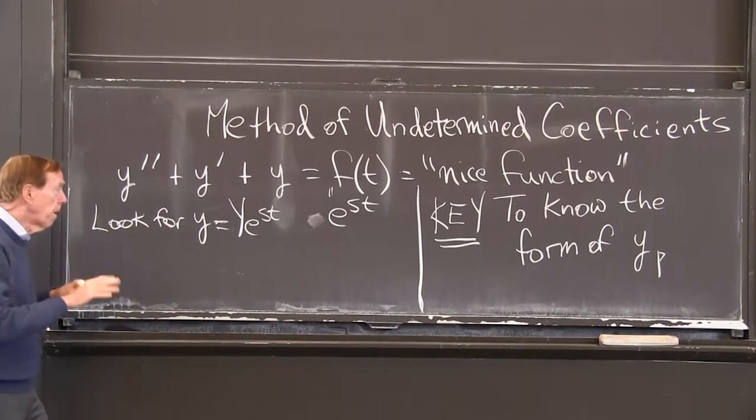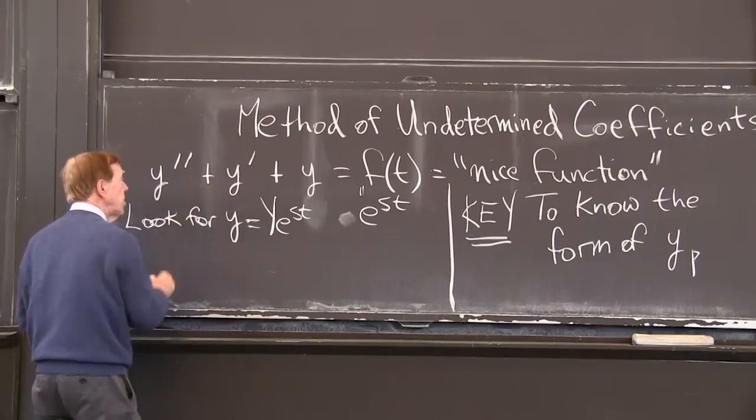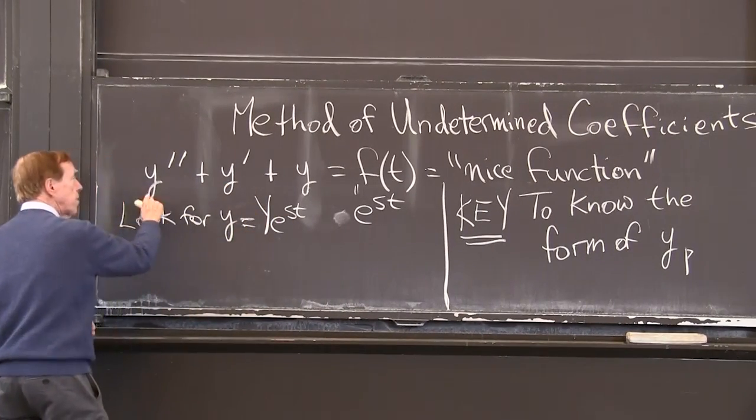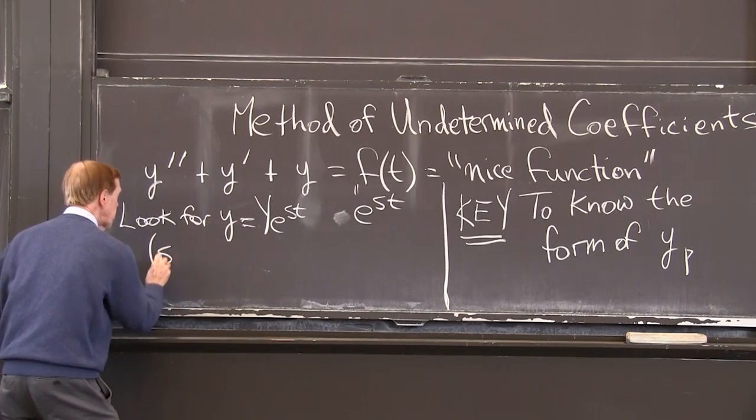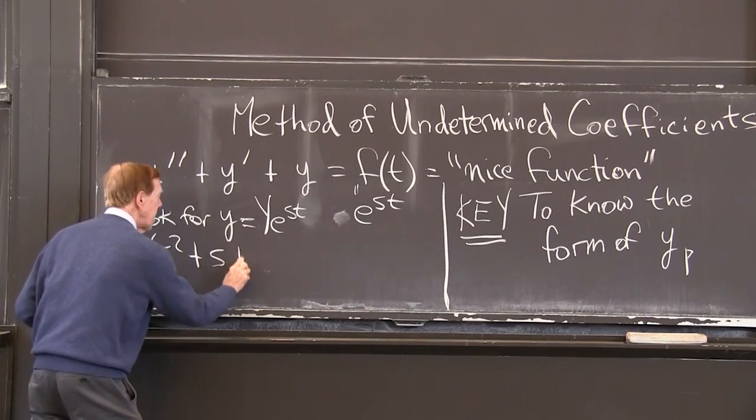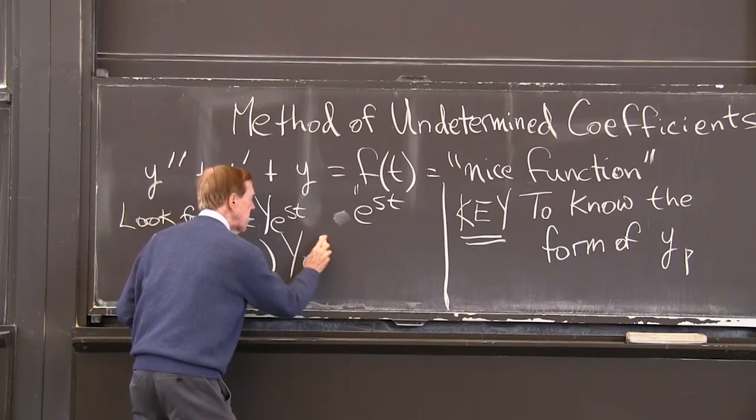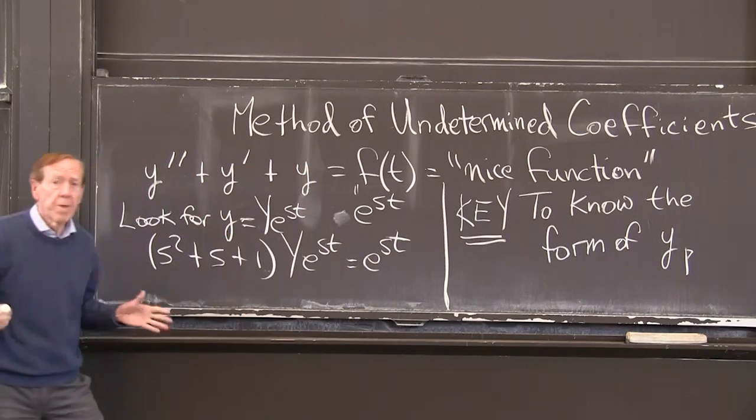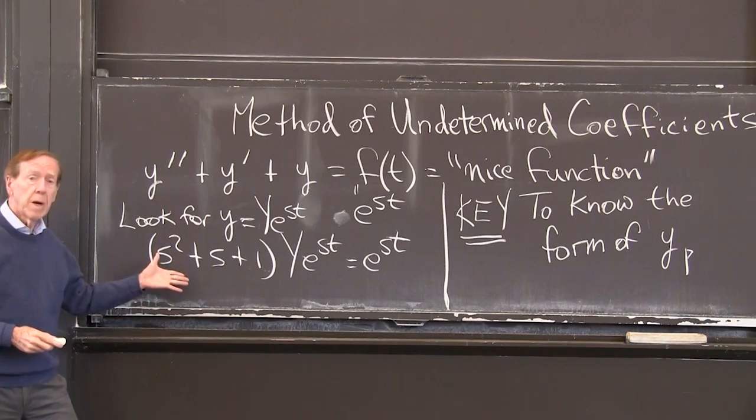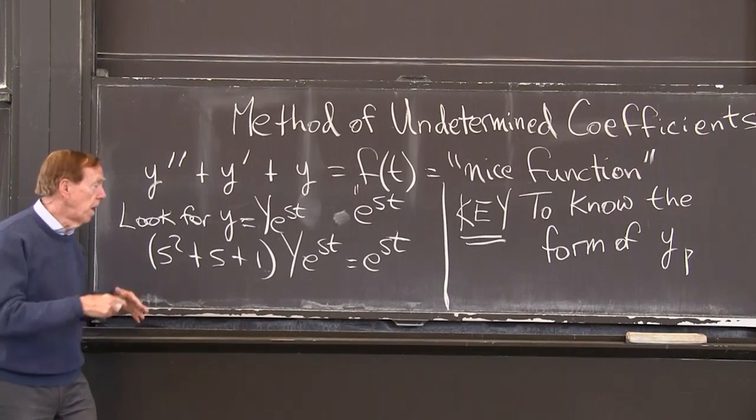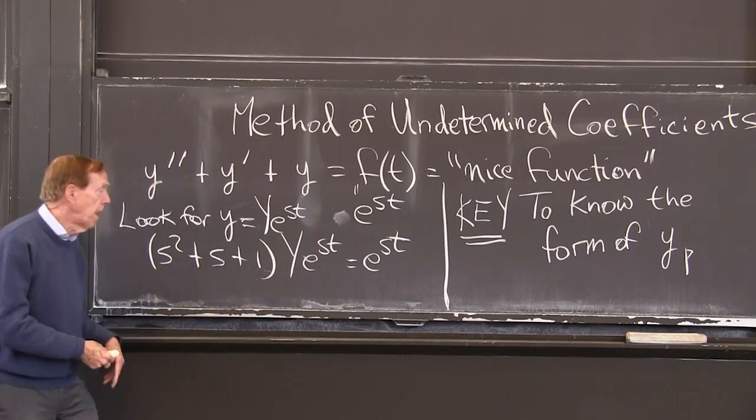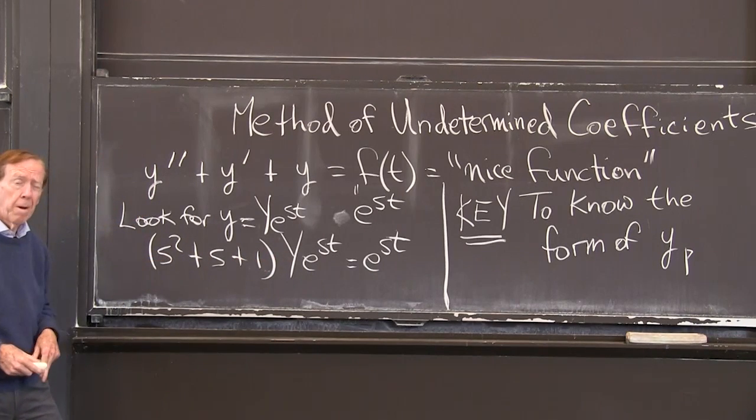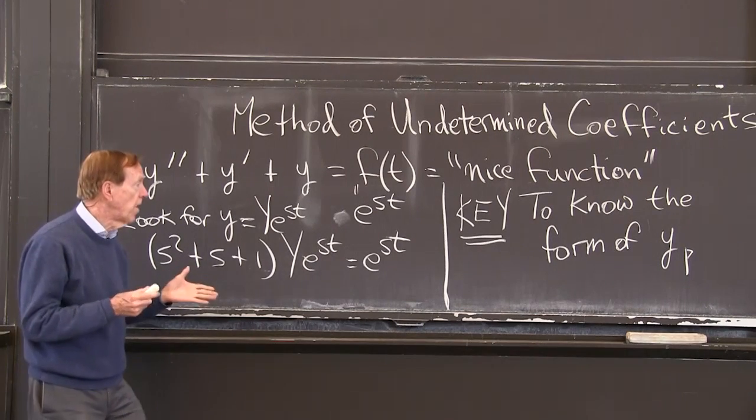This is our best example. When I put this in the equation, the derivative brings an s, second derivative brings another s. So I get s squared and an s and a 1 times y e to the st equals e to the st. We've done that before. Here we see it as a case with undetermined coefficient y. But by plugging it in, I've discovered that y is 1 over that.